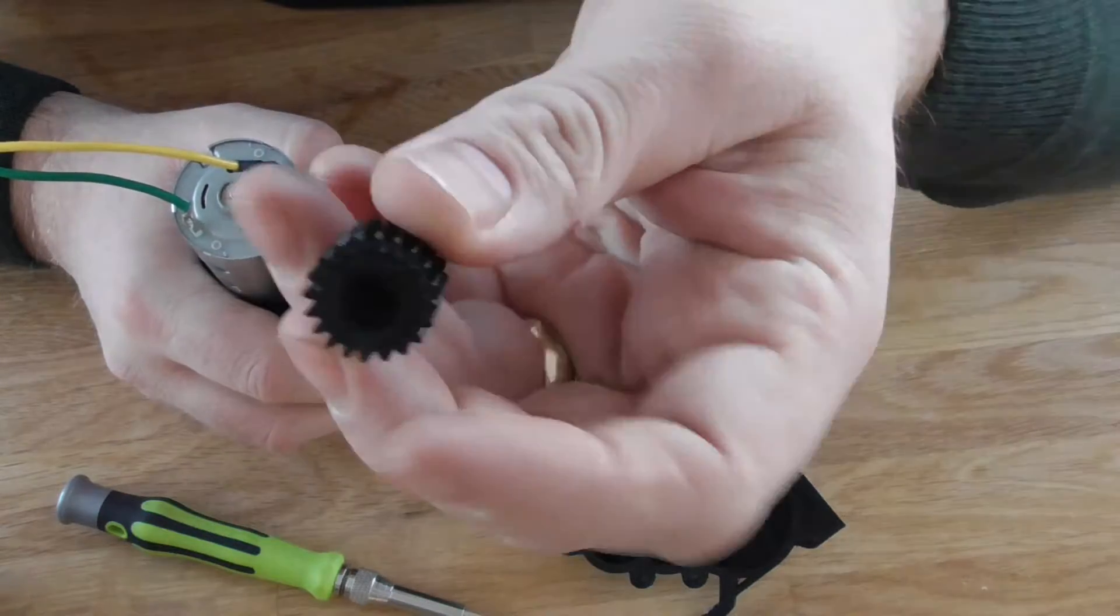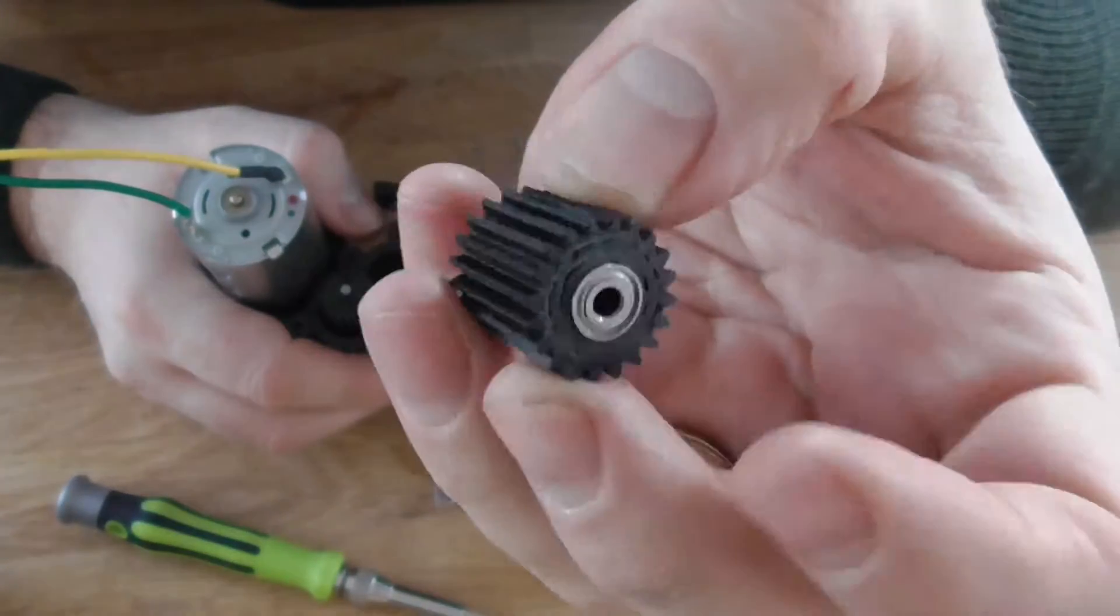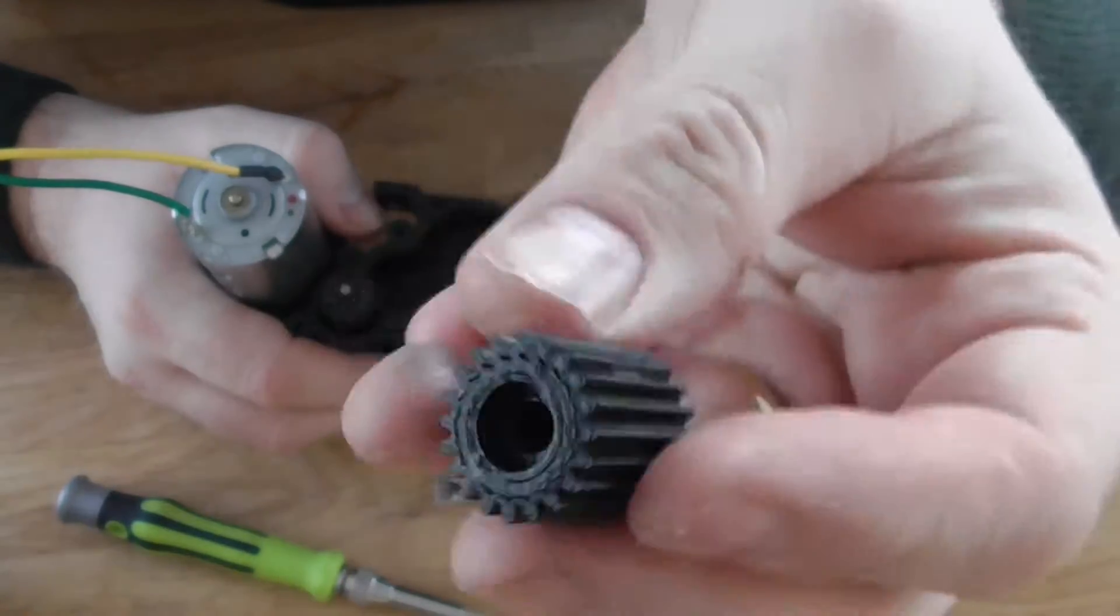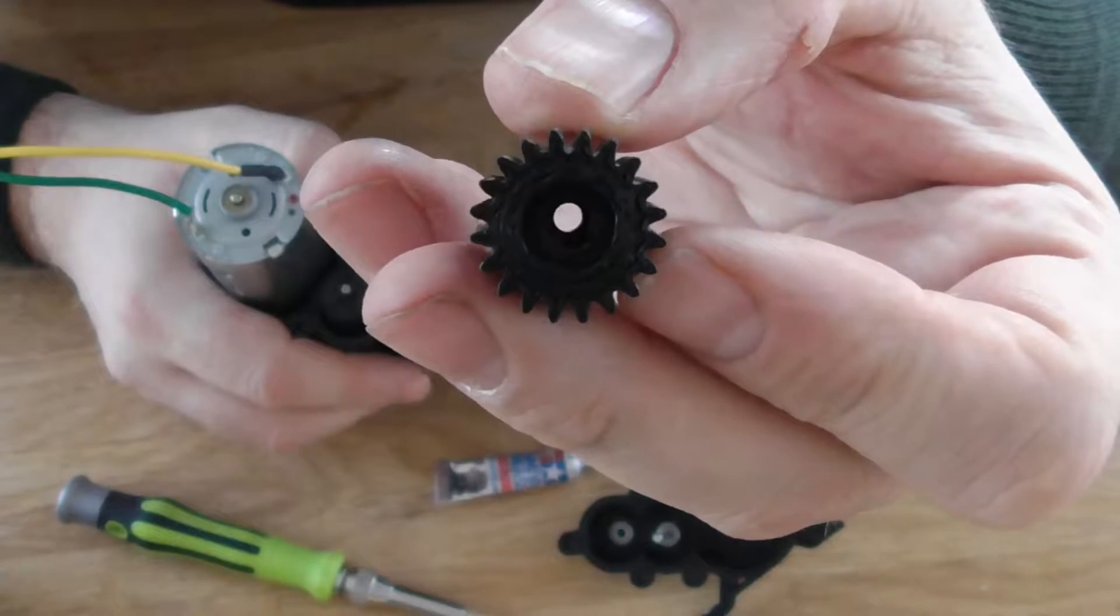As you can see, this gear is 3D printed. It has a pocket, and there's the other side of the ball bearing.